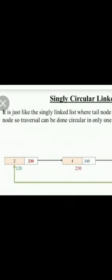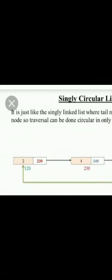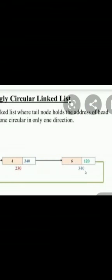For insertion at the beginning, you need to create a new node — for example, with address 200 — put your data value in the information field, and set the link field to 120, which was the previous first node address. Then, in the last node, instead of storing 120, you update it to store the address of the newly inserted node, which is 200.